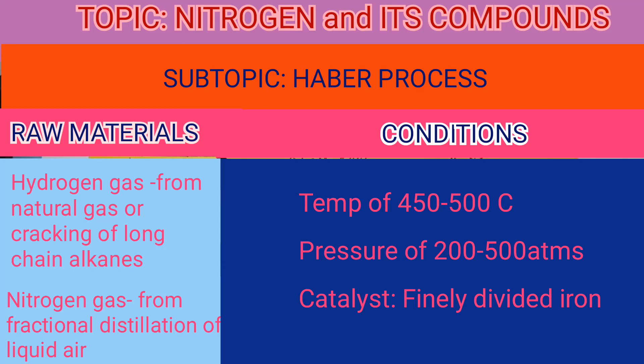Welcome to our lesson, learners. My name is Joseph Kipkoich, chemistry teacher. I'm going to take you through the topic of nitrogen and its compounds. The subtopic is the Haber process, which is the industrial manufacture of ammonia.